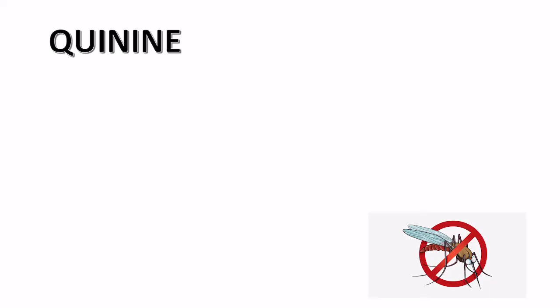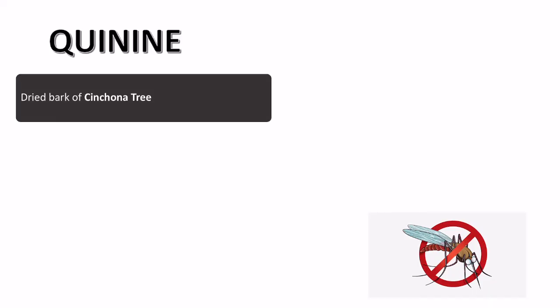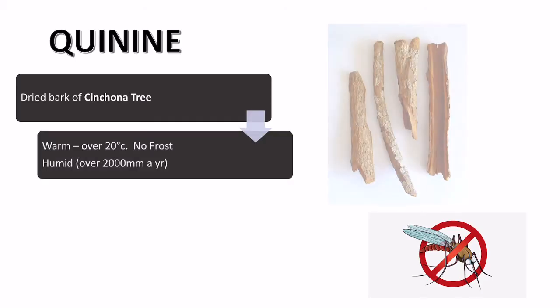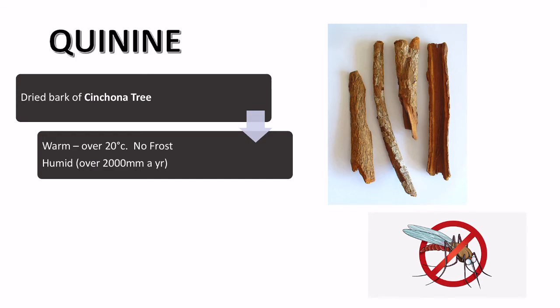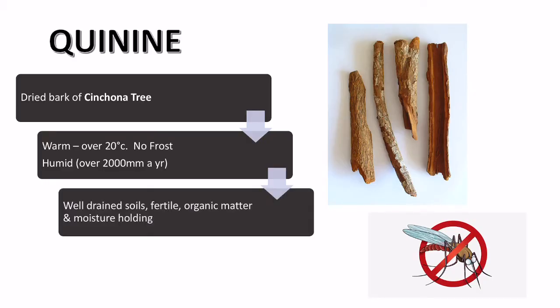The next is quinine, from the bark of the cinchona tree — it has a dried, reddish colour. It grows in warm conditions, over 20 degrees with no frost, and requires quite humid conditions though not as much rain as other plants. You often find it in places like India and West Asia. It needs drained, fertile soils with lots of organic matter — those tropical and subtropical conditions where nutrients are high and water drains away efficiently.